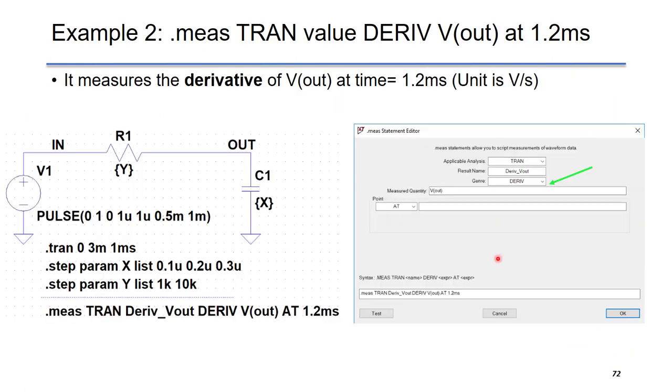In the second example, we will measure the derivative of Vout at the specific time, for example, 1.2 milliseconds. The derivative of output voltage is simply the dV over dT. The unit is volt per second.